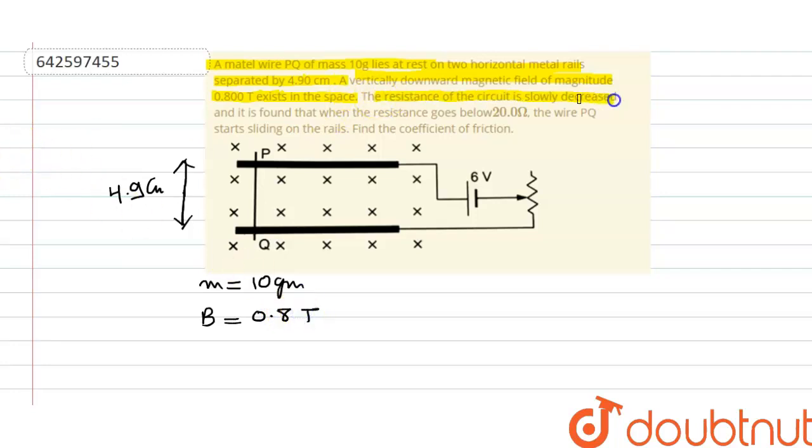The resistance of the circuit slowly decreases. It is found that when the resistance goes below 20 ohm, the wire PQ starts sliding on the rails. Find the coefficient of friction between the wire and the rails. So we need to find the coefficient of friction.